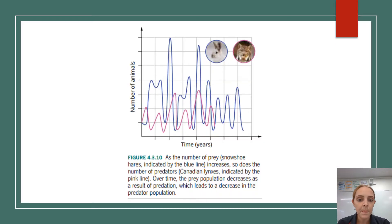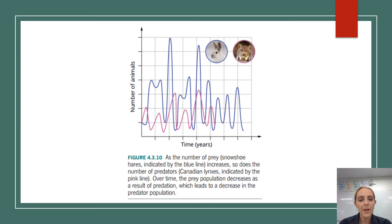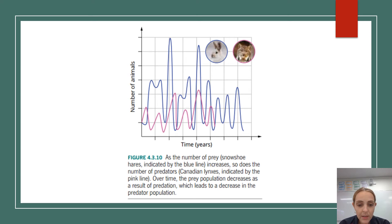In this figure, the prey — the hare — is shown in blue and the predator — the lynx — is shown in purple. There's natural variation over time, but you can see a correlation: as the prey population decreases due to predation, the blue line drops. Whenever the blue line decreases, it tends to be followed by a decrease in the purple line, due to that rise in intraspecific competition.